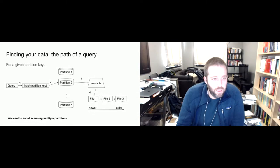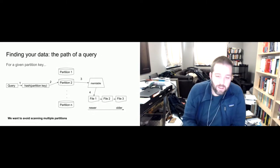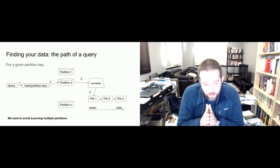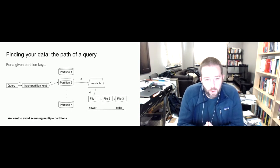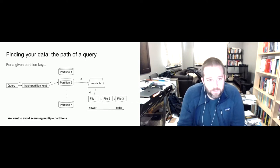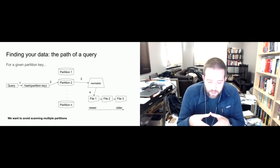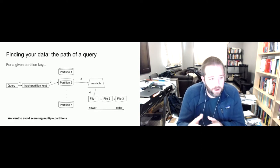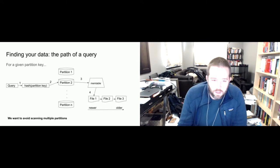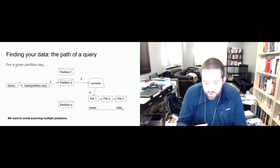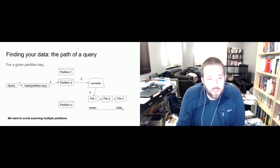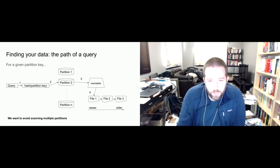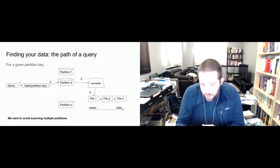This query path hits a single partition. The thing we really want to avoid is having to hit multiple partitions. This can happen if we don't structure our data model correctly or don't think carefully about our queries. If we have to scan multiple partitions — maybe doing some kind of range scan — we're interacting with multiple hosts and making multiple network calls. As the number of hosts increases, the overhead for a given query increases.